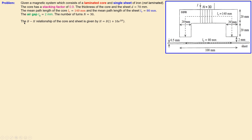We are also given the relationship between magnetic field intensity H and magnetic flux density B. This B-H relationship is given by a formula that is valid in the core and also in the sheet. Remember it is not valid in the air gap — only in the core and the sheet.